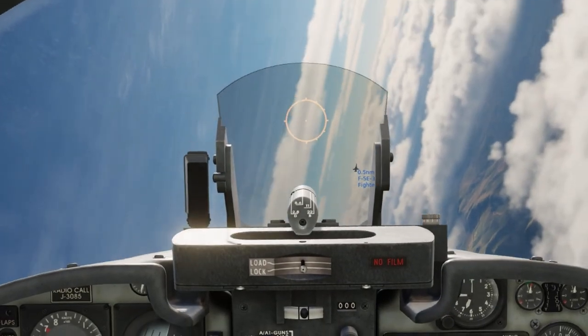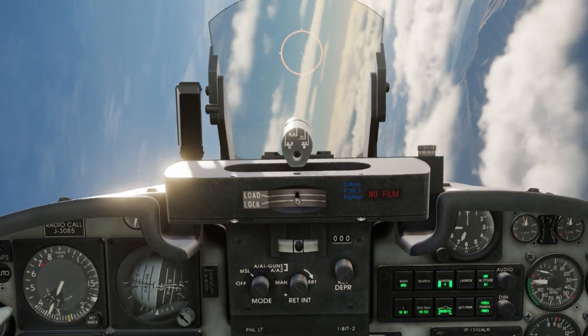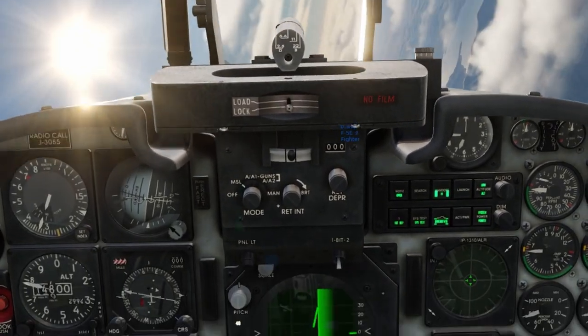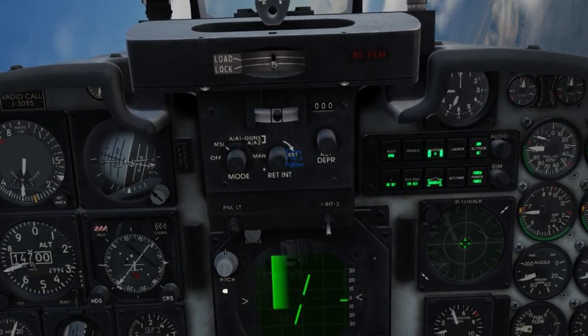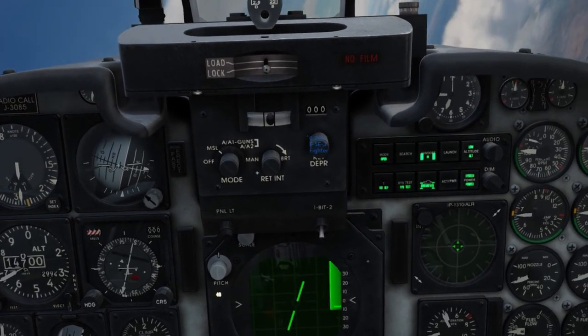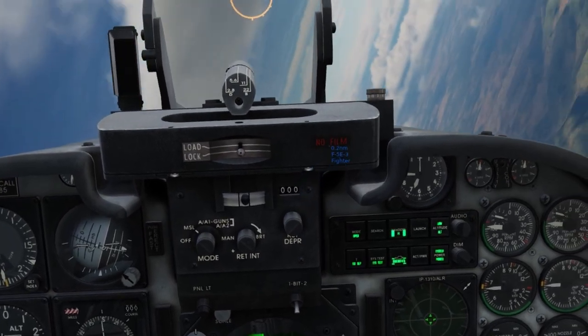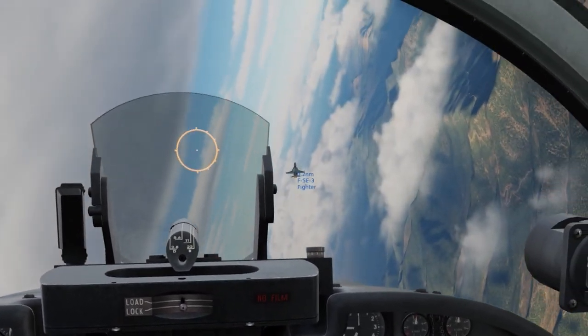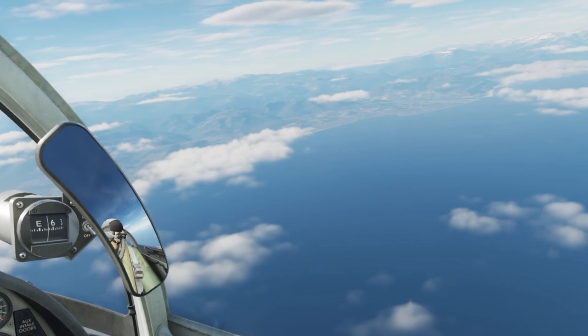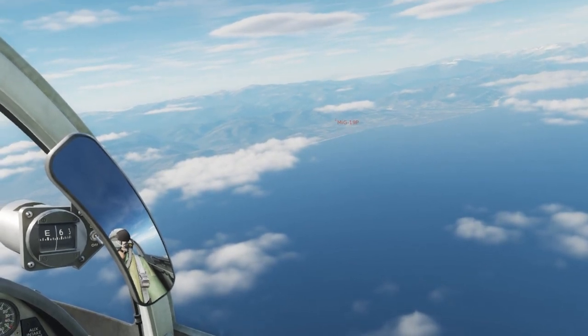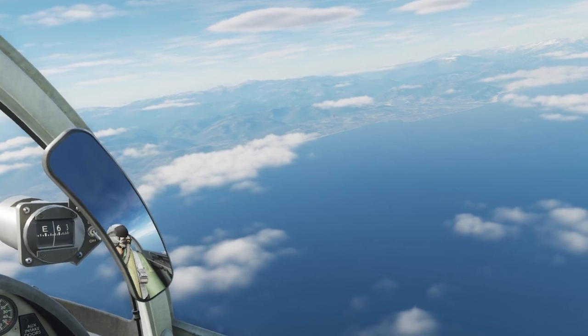By default, the mission has labels turned on. This should help with spotting bogeys, but it's a training aid. Labels are just like training wheels on a bike. They're helpful for someone that's new, but eventually they have to come off. So when you're ready to move up to the next level, turn them off by using left shift and F10. There are multiple levels of labels, so you need to hit those buttons until they're completely gone.